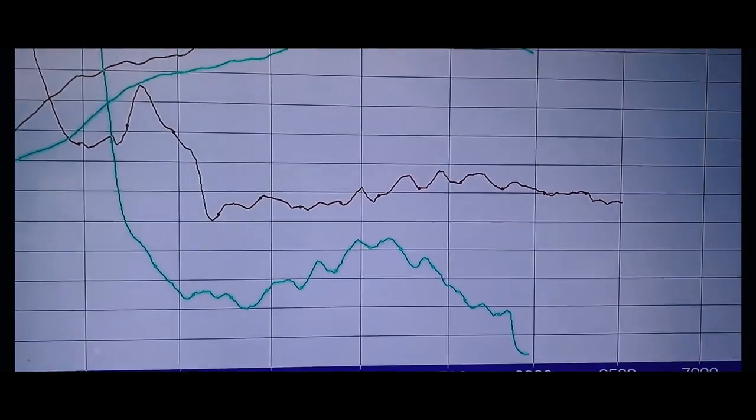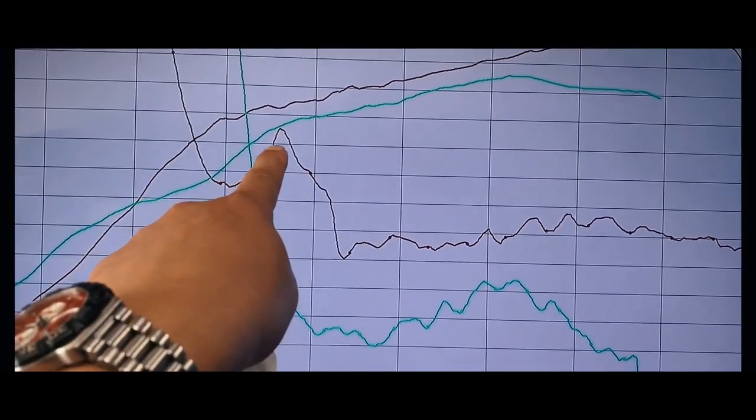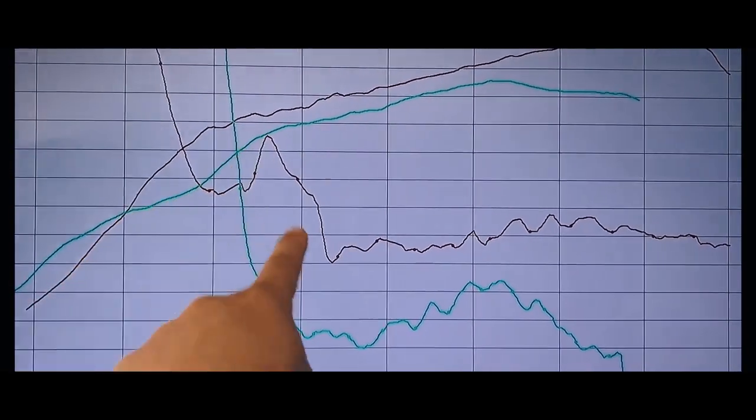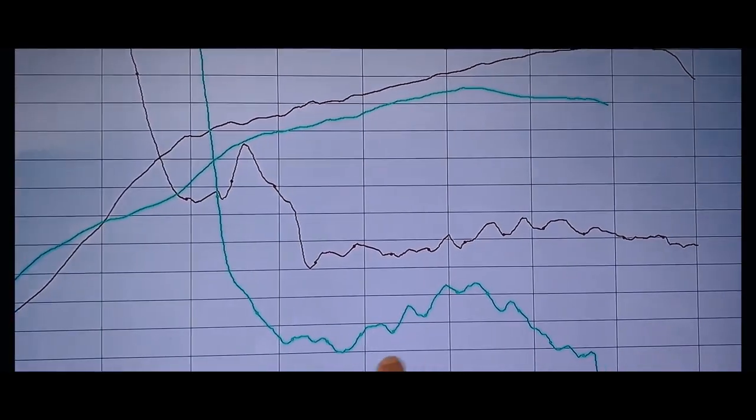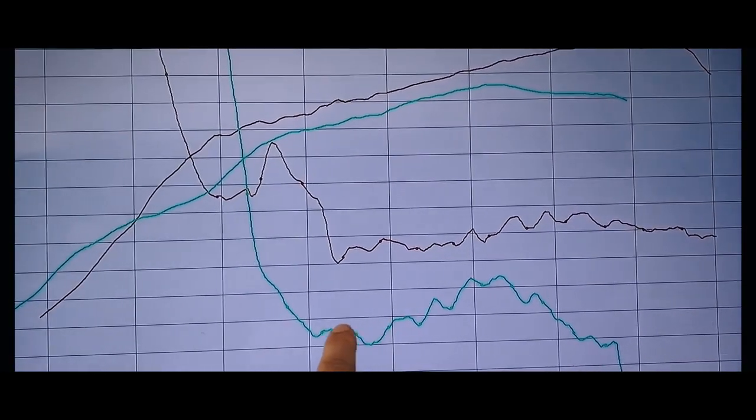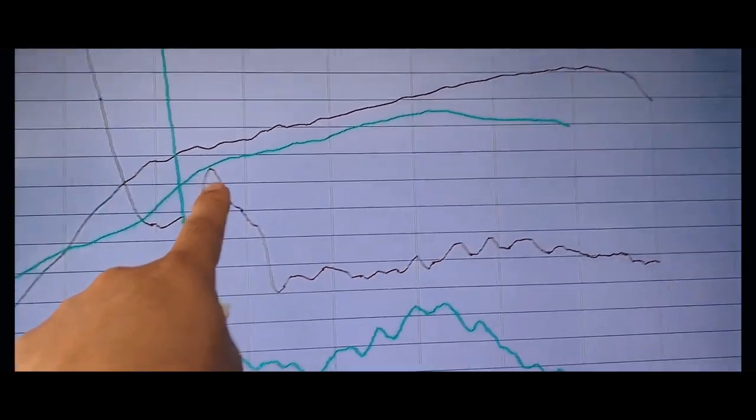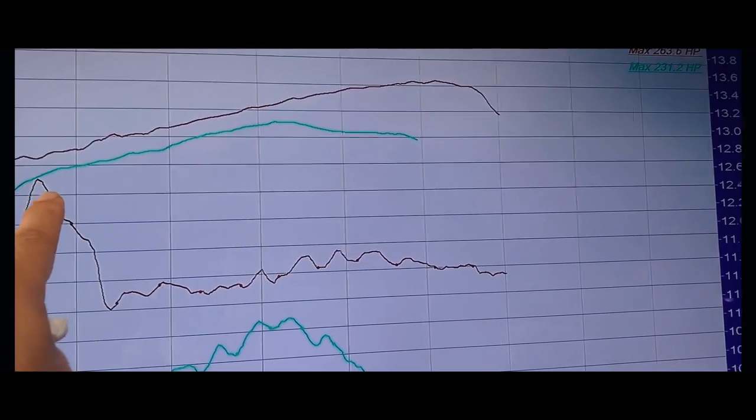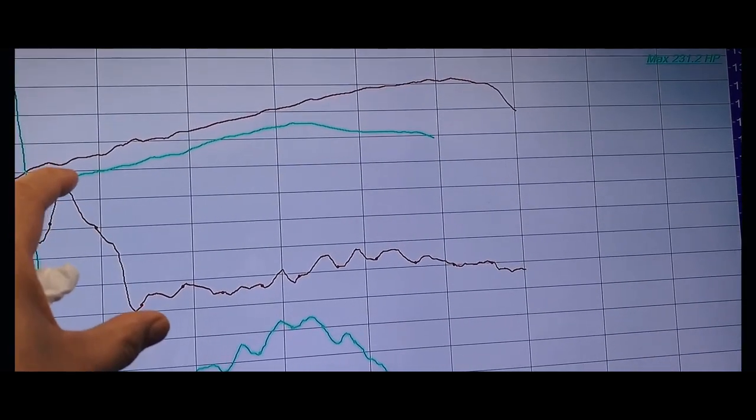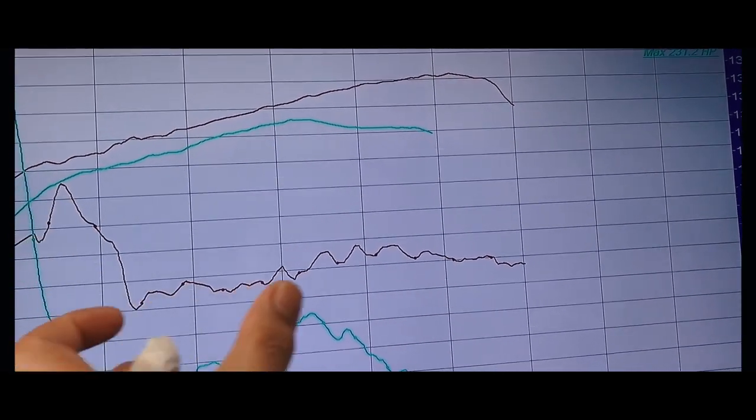This is the Hondata tune AFR where it gets really lean over here, and then this is the base Civic Type R where the AFR is really consistent. We're on the Hondata tune and it's just so lean right here, it's almost 13 to a point where there's so much spool right here and then less fuel.